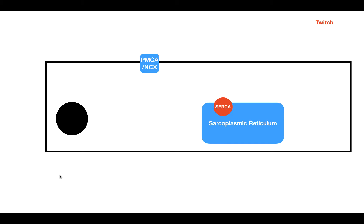What are the cellular mechanisms associated with this full relaxation? This is a simplified diagram of a muscle fiber. There are two mechanisms by which the muscle relaxes: first, the SERCA pump, which pumps calcium from the cytosol into the sarcoplasmic reticulum. The other mechanisms are the PMCA pump and the sodium-calcium exchanger (NCX), which pump calcium from the cytosol into the extracellular fluid. The PMCA uses ATP, while the NCX uses the energy from sodium's downward movement.